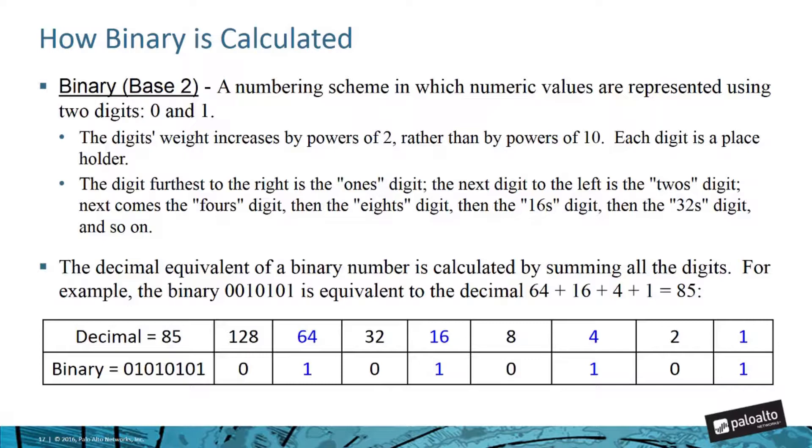As you can see from the small table there, when the bit is turned on, that placeholder value is calculated. Starting on the far right, you can see the 1's place, 2's place, 4's place, 8's place, 16's place, etc. And so if a bit is turned on in that placeholder or that digit, you add up the value of that placeholder. So 64 plus 16 plus 4 plus 1, that's going to give you 85.